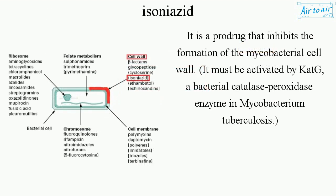It is a prodrug that inhibits the formation of the mycobacterial cell wall. It must be activated by KatG, a bacterial catalase-peroxidase enzyme in Mycobacterium tuberculosis.